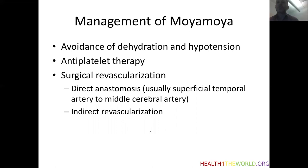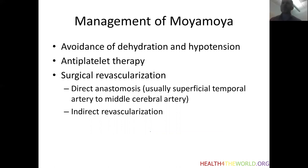In children who have recurrent symptoms despite medical management, we often proceed to surgical revascularization. There are a number of techniques divided into direct and indirect revascularization. In direct procedures, the surgeon directly anastomoses a branch of the external carotid artery — usually the superficial temporal artery — to the middle cerebral artery. Indirect procedures involve onlay of the superficial temporal artery or another extracranial artery onto the meninges, the dura, or the pia, which promotes over time angiogenesis and regrowth of blood vessels into the parts of the cortex prone to ischemia.